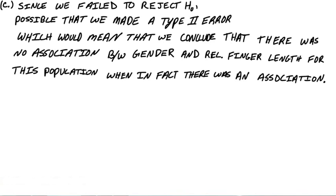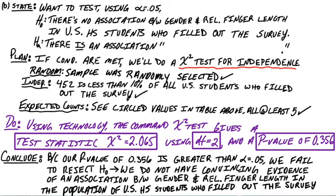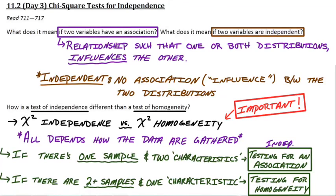That's our first experience with a chi-square test for independence. In our results, we couldn't reject the null and couldn't find an association, so we couldn't say they weren't independent. The most important distinction to remember is between a chi-square test for independence and a chi-square test for homogeneity. That's all for these notes.